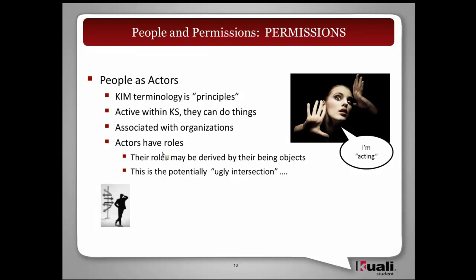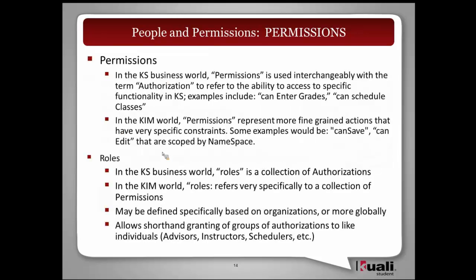What we mean by the 'ugly intersection' is the idea of a person type — an object of students — and how that sometimes gets muddied with the role of a student. Similarly with instructor: there's a thing that's an instructor, and then there's also the permissions and the things they can do as an instructor. Understanding that intersection can be a little tricky — that's what we mean by the ugly intersection between the objects and the roles, making sure we're not conflating the two.